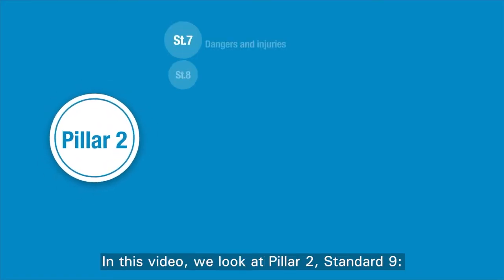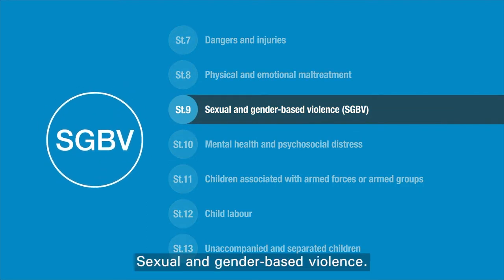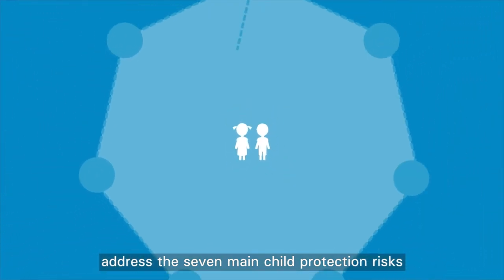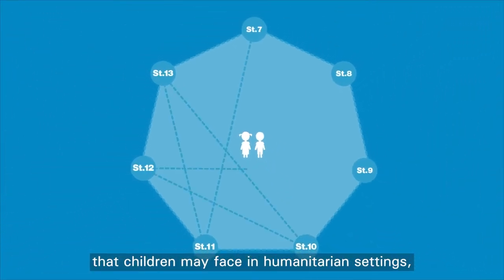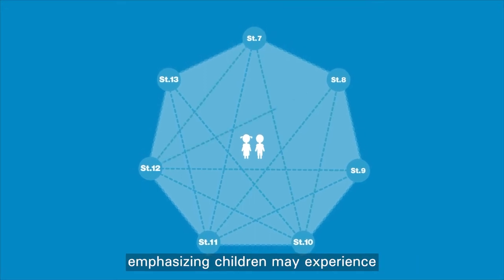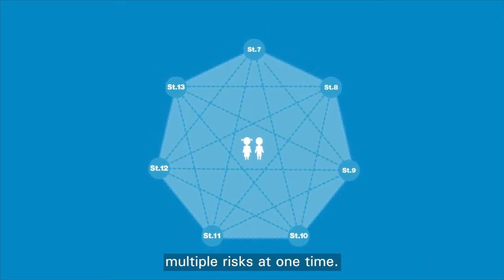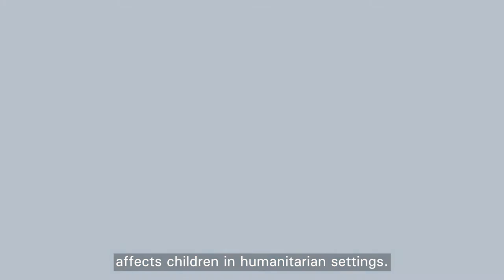In this video, we look at Pillar 2, Standard 9: Sexual and Gender-Based Violence. The standards in Pillar 2 address the 7 main child protection risks that children may face in humanitarian settings, emphasizing that children may experience multiple risks at one time. Let's take a look at how sexual and gender-based violence affects children in humanitarian settings.